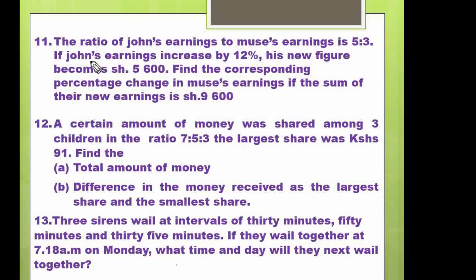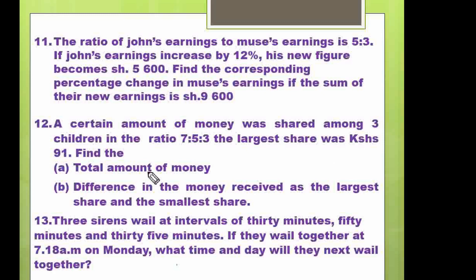Question number eleven: the ratio of John's earnings to Musae's earnings is 5 to 3. If John's earnings increase by 12 percent, his new figure becomes 5,600 shillings — find the corresponding percentage change in Musae's earnings if the sum of their new earnings is 9,600 shillings. Question number twelve: a certain amount of money was shared among three children in the ratio 7 to 5 to 3; the largest share was 91 shillings. Find part a) the total amount of money, and part b) the difference between the largest and smallest shares.